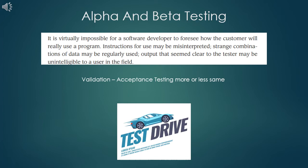Just like a placement drive, software testers conduct a test drive. A test drive is conducted where the customers are provided with the software and asked to use it. The customers are asked to report things which they don't like or find faulty in that software. Technically, two approaches exist for this type of validation test which directly involves the customer. They are namely alpha and beta testing.